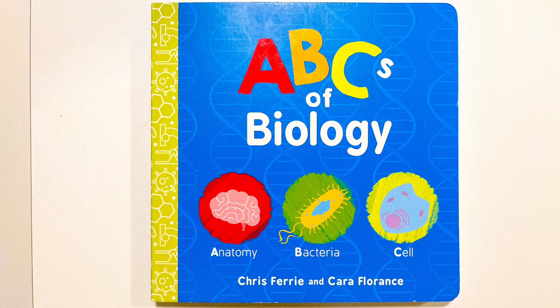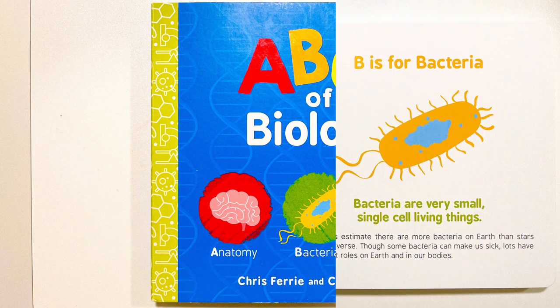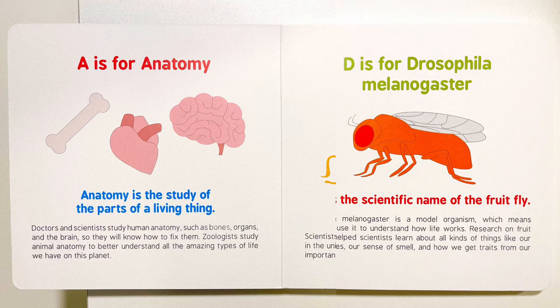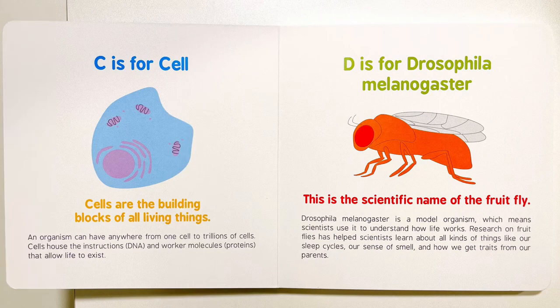ABCs of biology. A is for anatomy. B is for bacteria. C is for cell. D is for drosophila melanogaster.